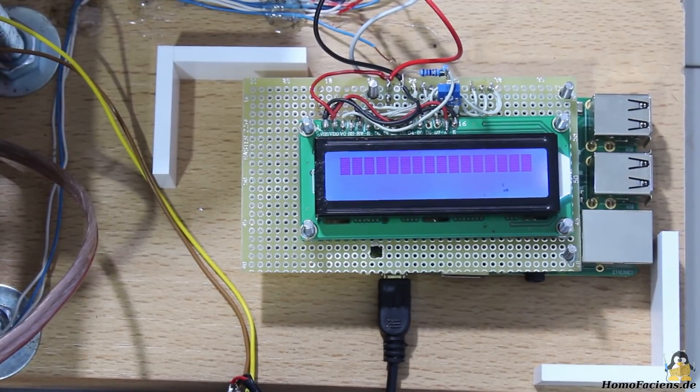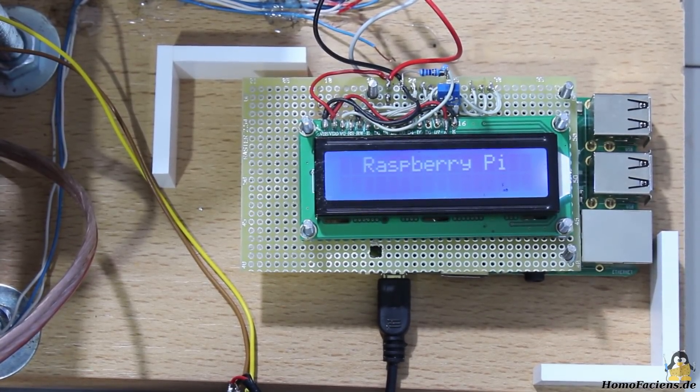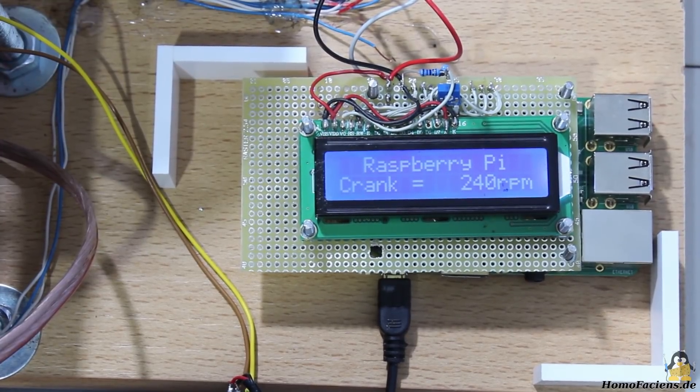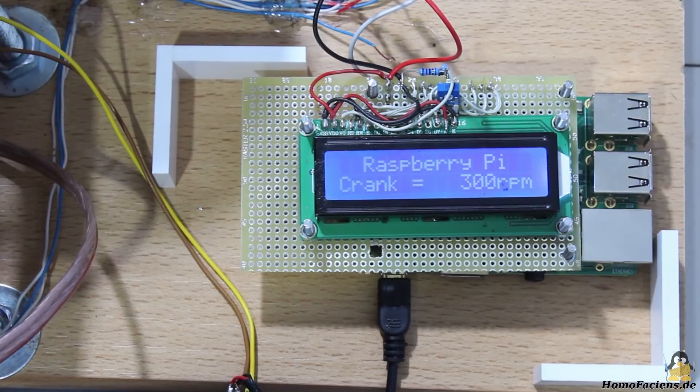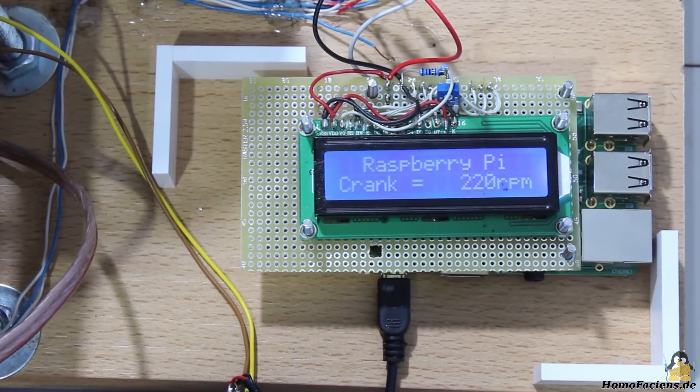Now I must crank for 28 seconds until the program displays a result on the LCD. The crank speed must be kept above 220 revolutions per minute or else the output voltage of the generator gets too low for the step-down converter.